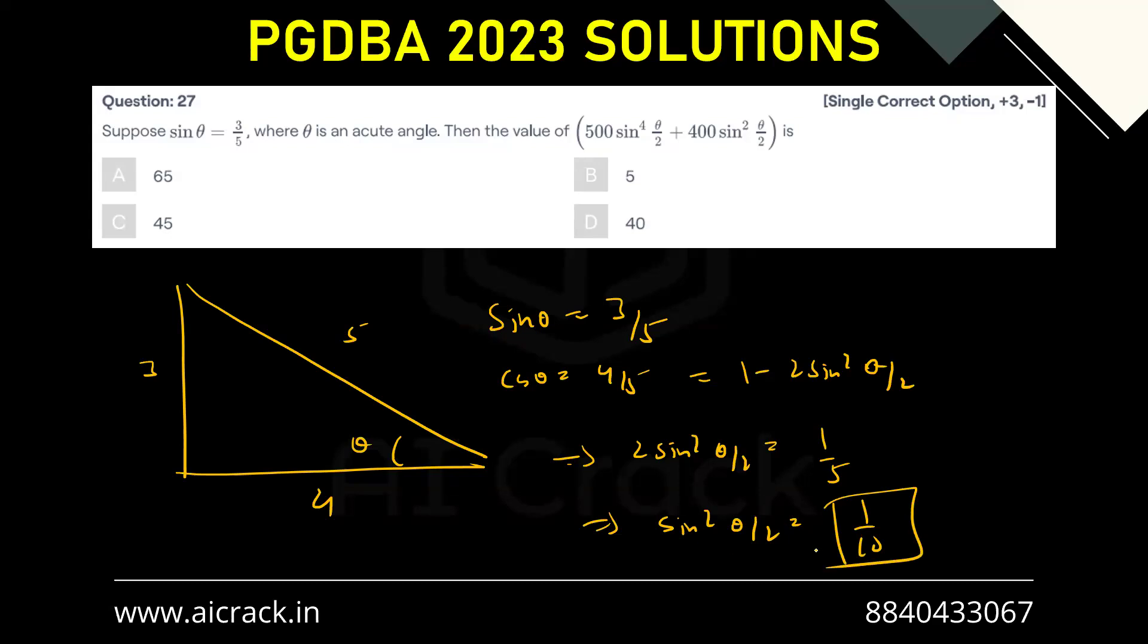Now we have got sine square theta by 2 as 1 by 10. So we have to plug those values over here. So we'll be getting 500 times 1 by 100 because we have sine to the 4th theta by 2 over here, plus 400 times sine square theta by 2 that is 1 by 10. Now this comes out to be 5 and this comes out to be 40, that is 45. So C is the correct answer.